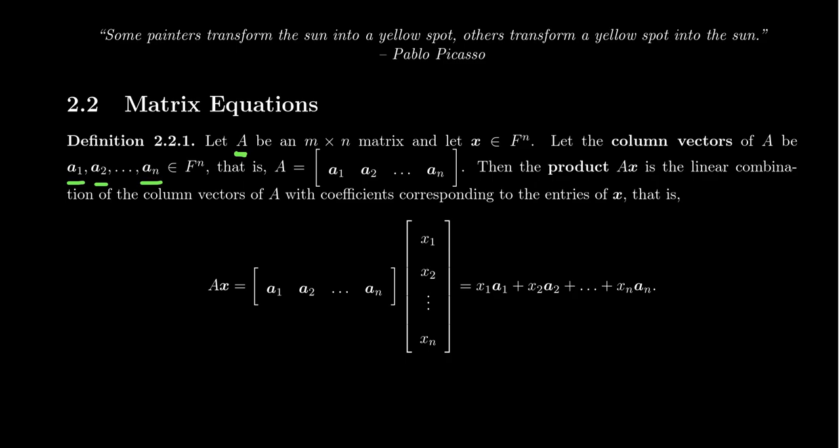And then the column vectors of said matrix will often be denoted as vectors. So they'll be bolded, like you see on the screen right here. But then we'll bold the lowercase letter of that same one. So lowercase A's: A1, A2, up to AN represent the column vectors of the matrix.